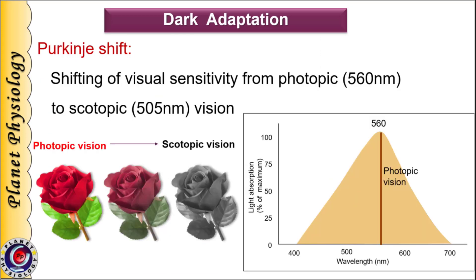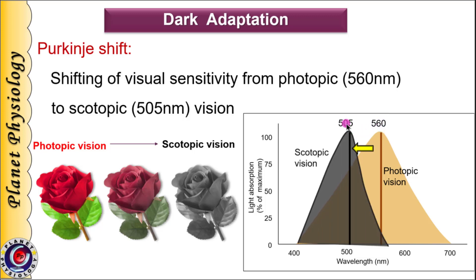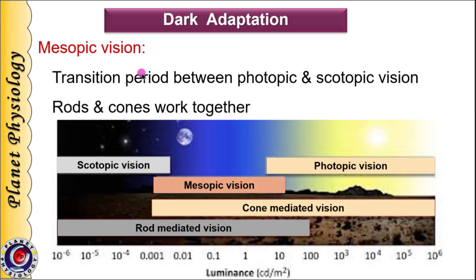Adaptation of eyes from light to dark is a gradual process where peak visual sensitivity shifts from 560 nm to 505 nm. This shifting of photopic vision to scotopic vision is called the Purkinje shift. It is seen at the time of dusk. During the transition period, both cone and rod mechanisms work together, and such vision is called mesopic vision. Mesopic vision is present during dusk, dawn, and at night in the presence of night lights.